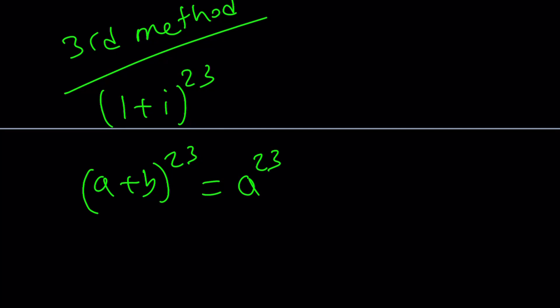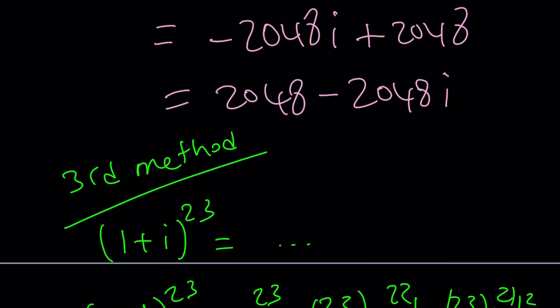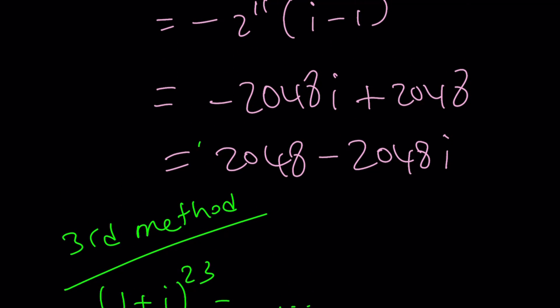A to the power 23. And then 23 choose 1, A to the power 22, B. 23 choose 2, A to the power 21, B squared. And if you apply it, you're hopefully going to get the answer. But guess what? You're going to have some terms with i, some terms with numbers. You're going to simplify, put it together. And if you still have the patience or if you didn't make any mistakes, which is very unlikely, you're going to get the same answer.